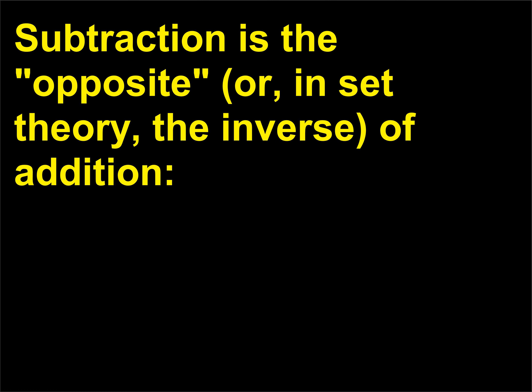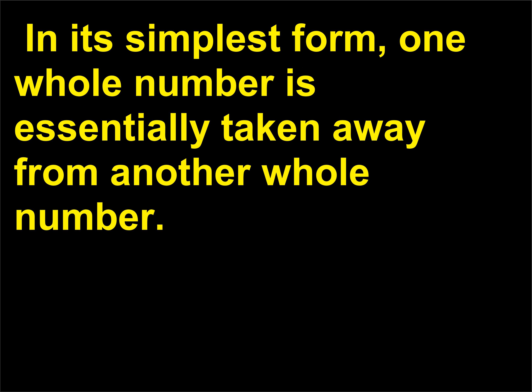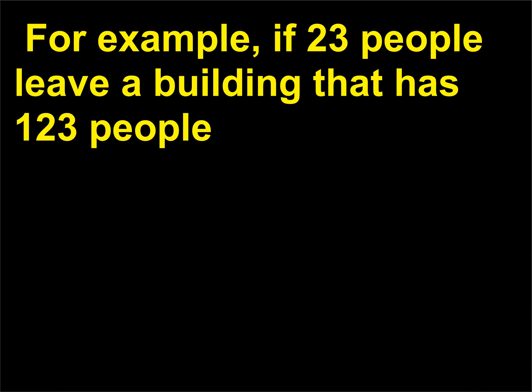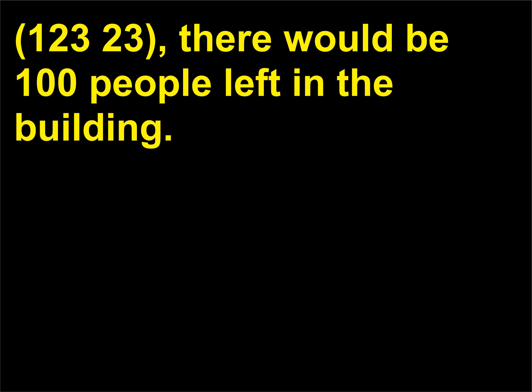Subtraction is the opposite, or in set theory the inverse, of addition. In its simplest form, one whole number is essentially taken away from another whole number. When you subtract numbers, you are answering the question of how many are left. For example, if 23 people leave a building that has 123 people — 123 minus 23 — there would be 100 people left in the building.